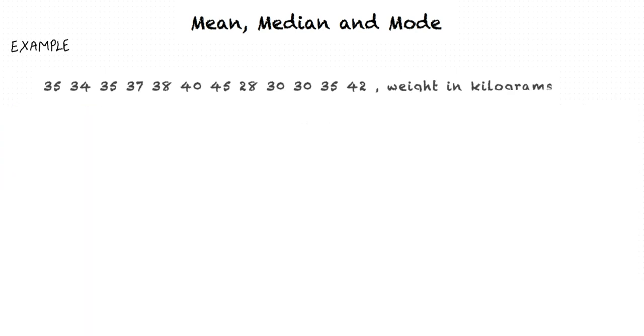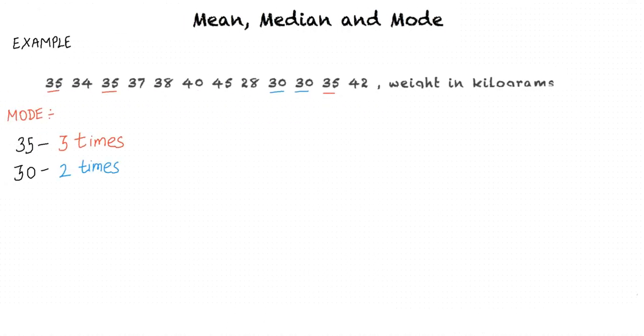Now let us calculate the mode. To calculate the mode, we look for the value which is repeated the most number of times. Carefully analyzing the data set, we can see that 35 is repeated 3 times, 30 is repeated twice, and all other data occur only once. Hence, the mode — the most repeated value — is 35.